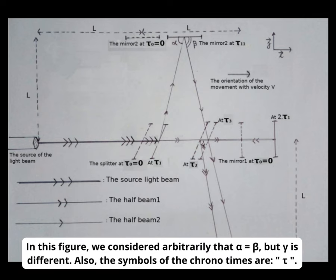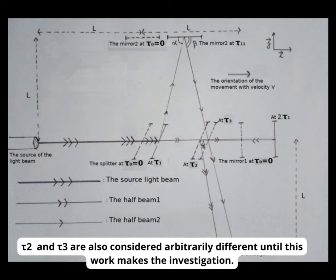In this figure, we consider arbitrarily that alpha equals beta, but gamma is different. Also, the symbols of the chrono times are tau. Tau 2 and tau 3 are also considered arbitrarily different until this work makes the investigation.